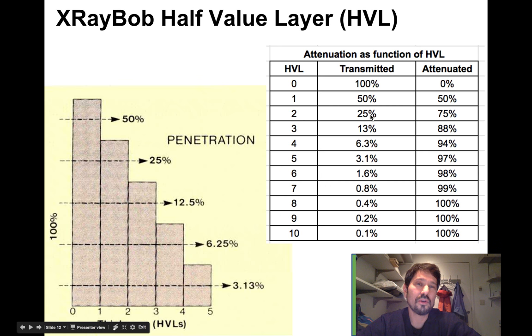after two HVLs, 25% would transmit. Therefore, 75% would be attenuated. We're going to need to build this table to solve some of our math problems.